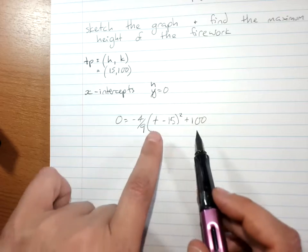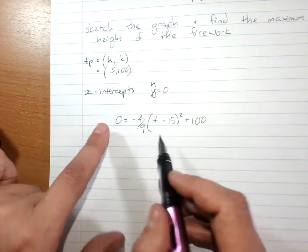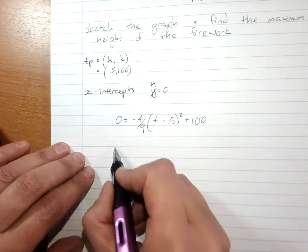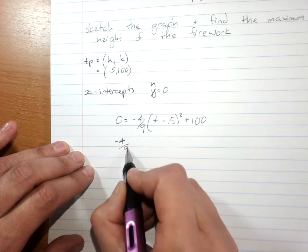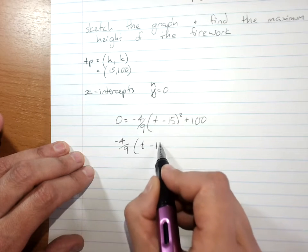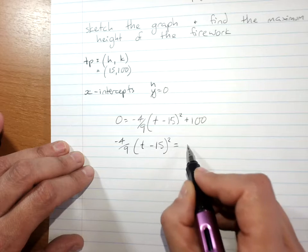Now, solve for t, take your 100 over the other side. I actually prefer to keep t on this side. So that's negative 4 over 9, t minus 15 squared equals negative 100.